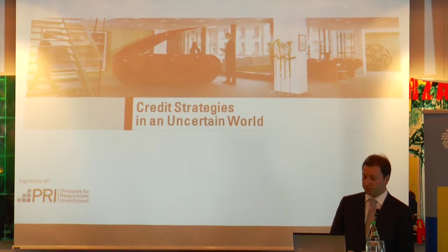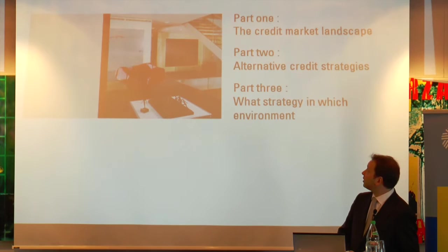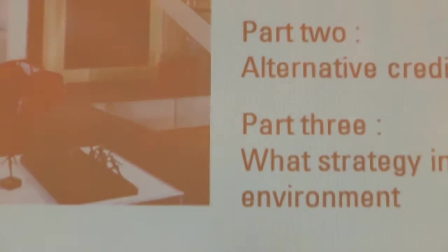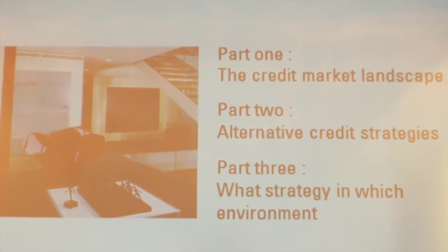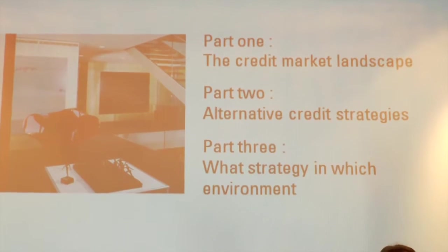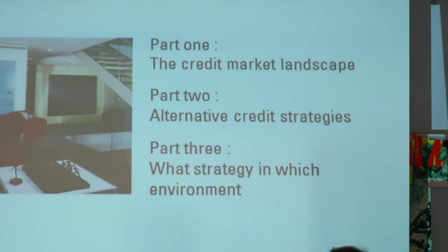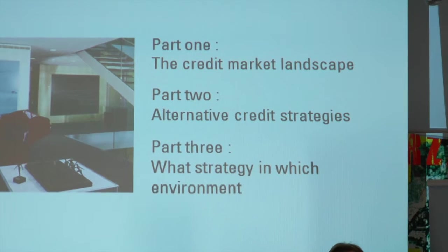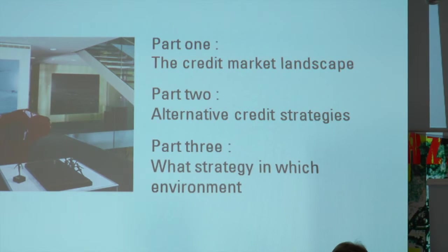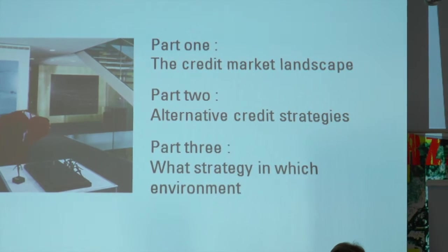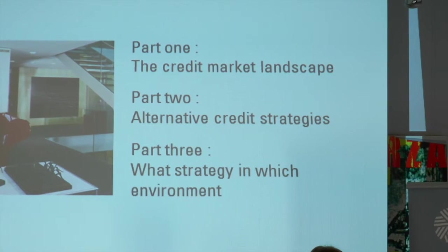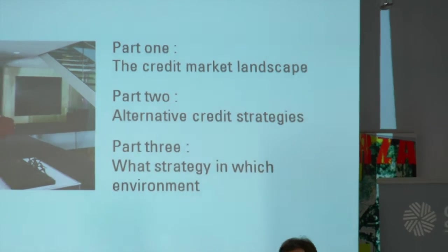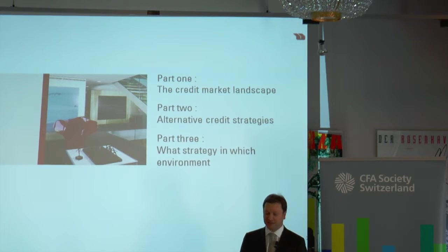Just to define the scope of today: I am not trying to give you a macro view on how to allocate. What I will try to do is give a bit of background on the credit market, then talk about the different strategies that can be implemented — not all of them, but some — with constraints that will allow you to potentially achieve your objectives. Then I will put in a macro element by looking at three different scenarios and seeing how these strategies behave. Unfortunately, there is not a single one that works in every scenario.